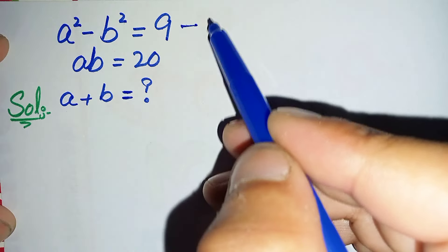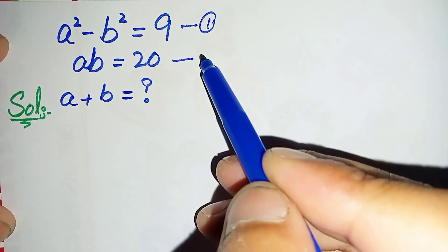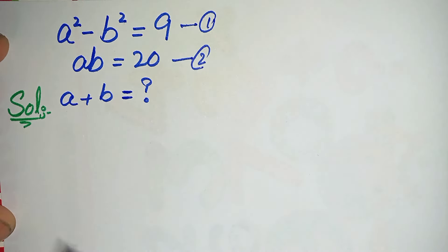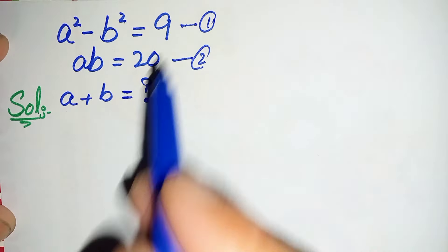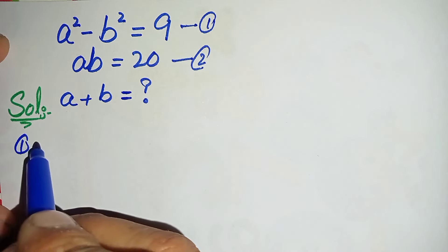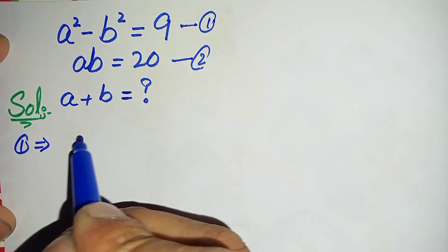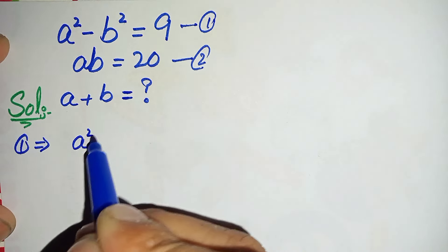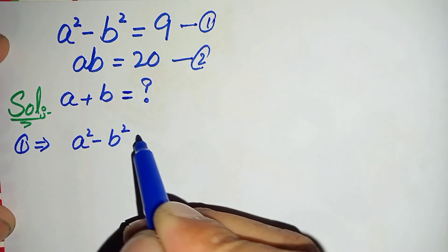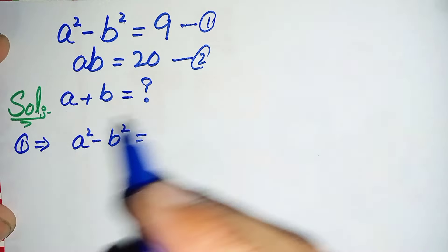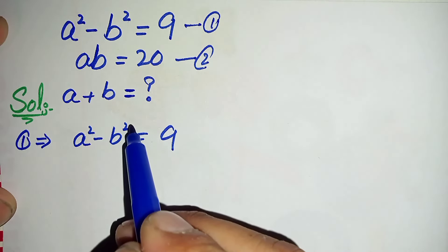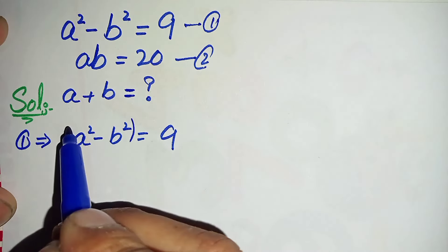We will call this equation number one and this equation number two. Now first of all we will take the square of equation number one: a² - b² is equal to 9, so let us take the square on both sides.